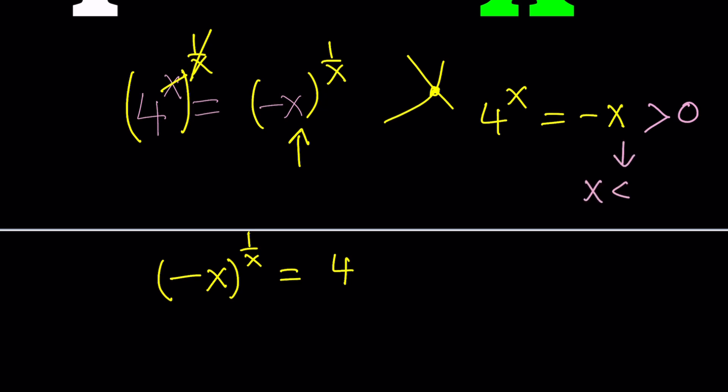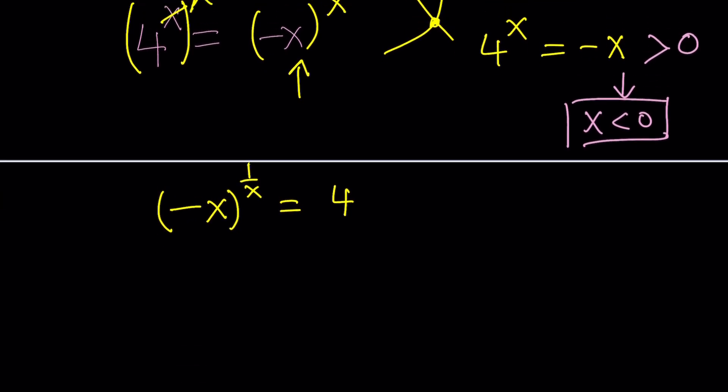So it's safe to say that this expression is positive, but that means x is negative. Why? Because negative x is positive, meaning that the opposite of x is positive, which means x is negative. So x is less than 0. That's also a good finding. Now, under these conditions, we're going to go ahead and look for a nice solution.